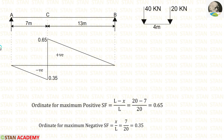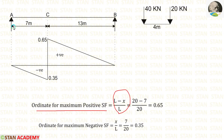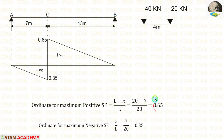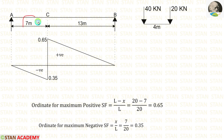Now let us make the influence line diagram for shear force. The formula for the ordinate for maximum positive shear force is (L − x)/L. With L = 20 m and x = 7 m, we get 0.65. The formula for the ordinate for maximum negative shear force is x/L. With x = 7 m and L = 20 m, we get 0.35.